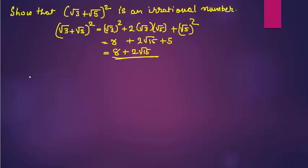Now suppose 8 + 2√15 is a rational number. If this is a rational number, what can you say? You can write this in the form of p/q, means 8 + 2√15 equals a/b.